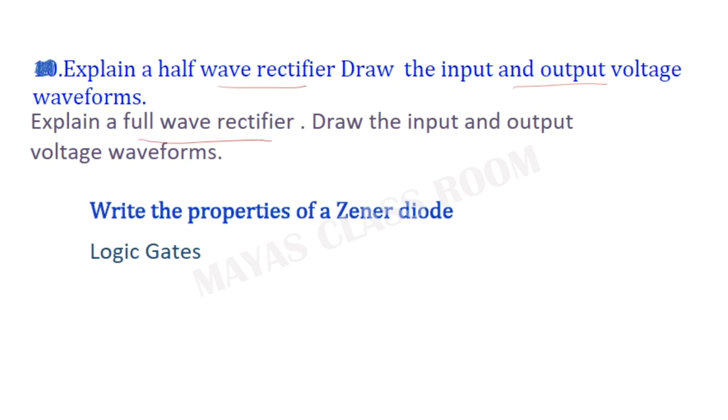Learn the properties of the Zener diode. The Zener diode has a characteristic graph. The Zener diode works as a voltage regulator.